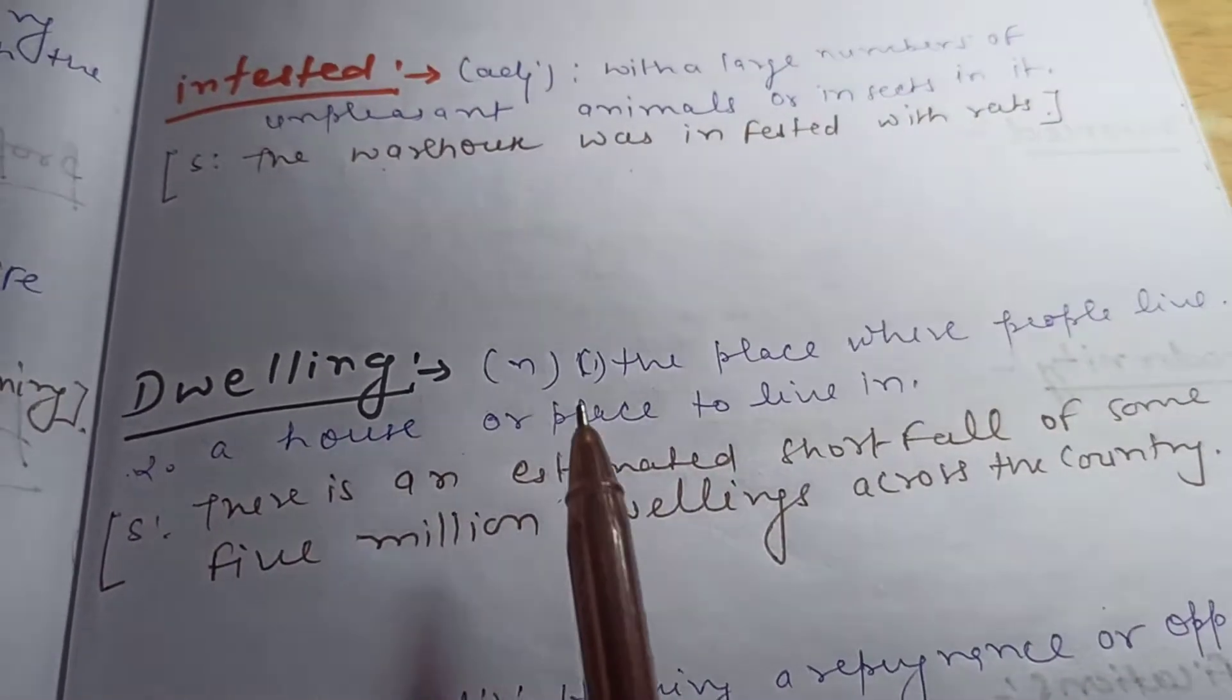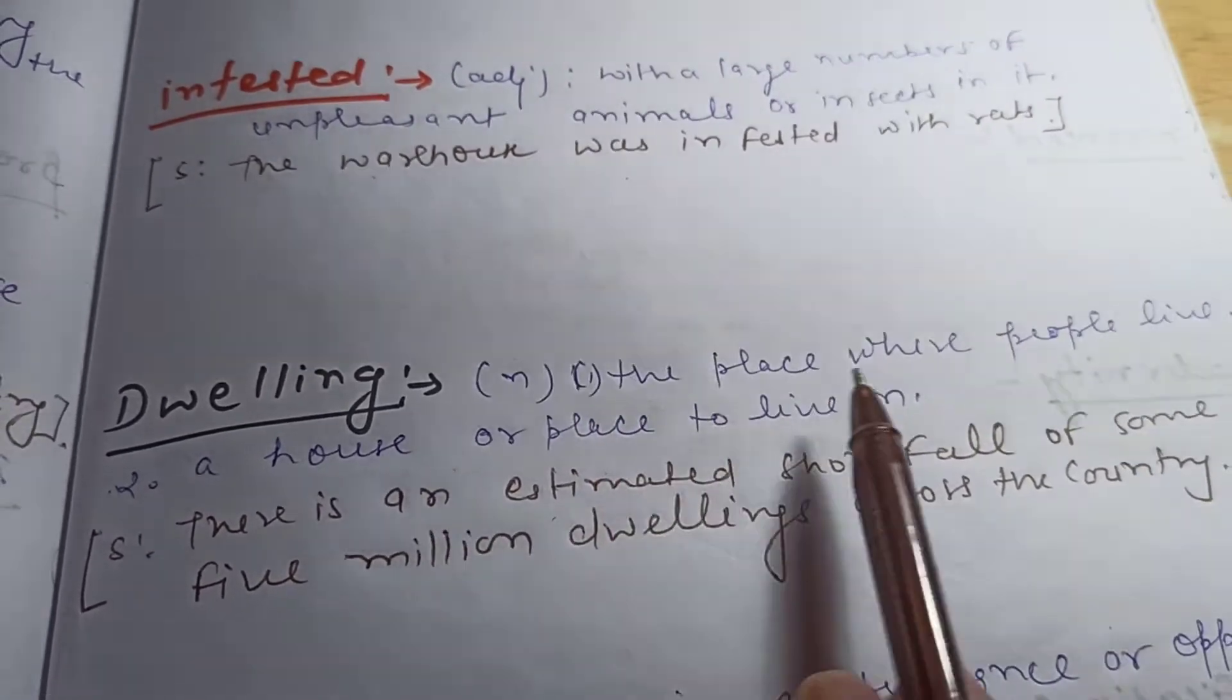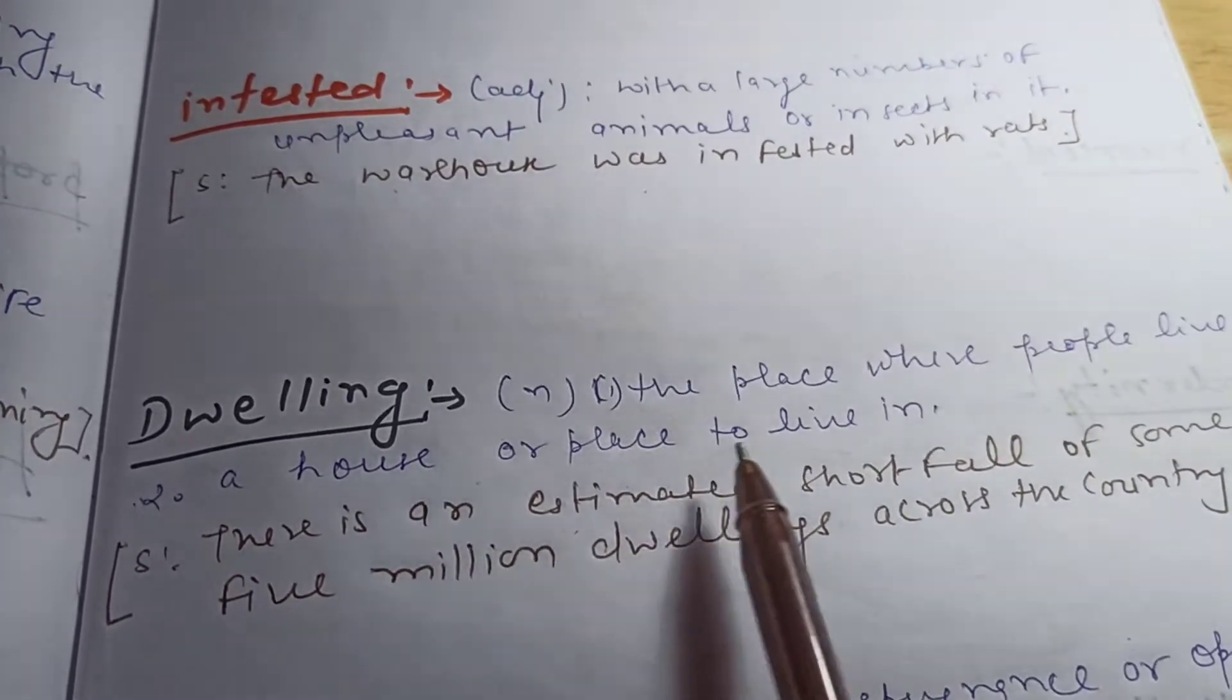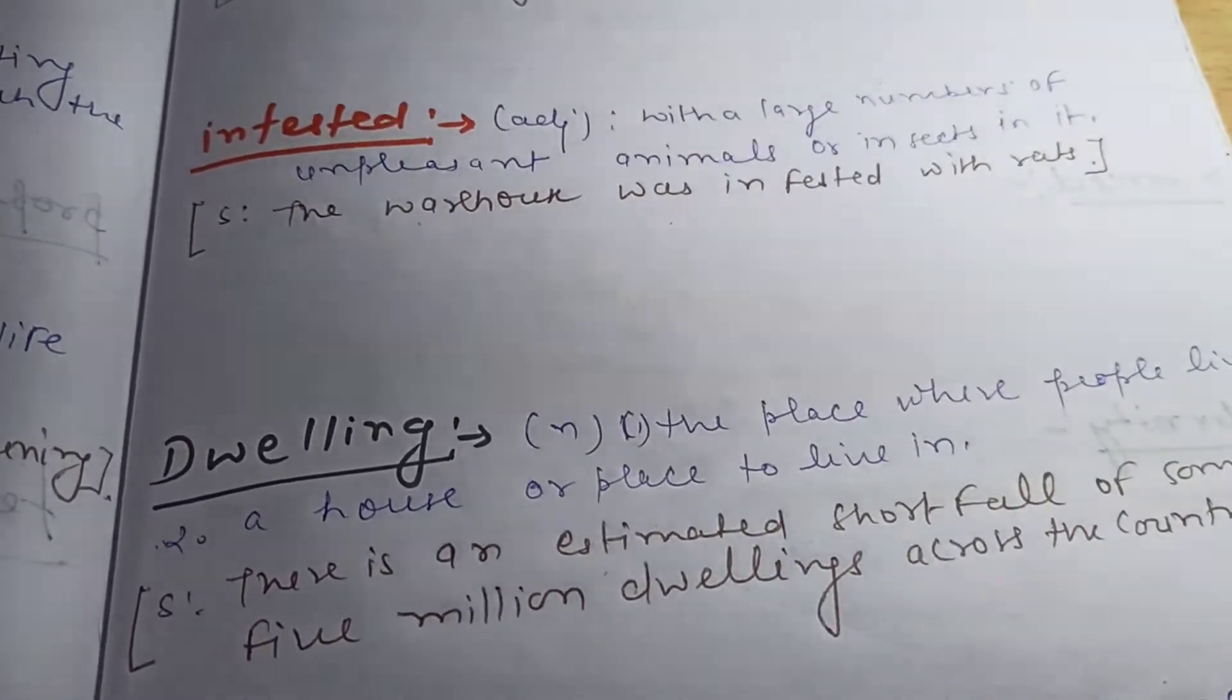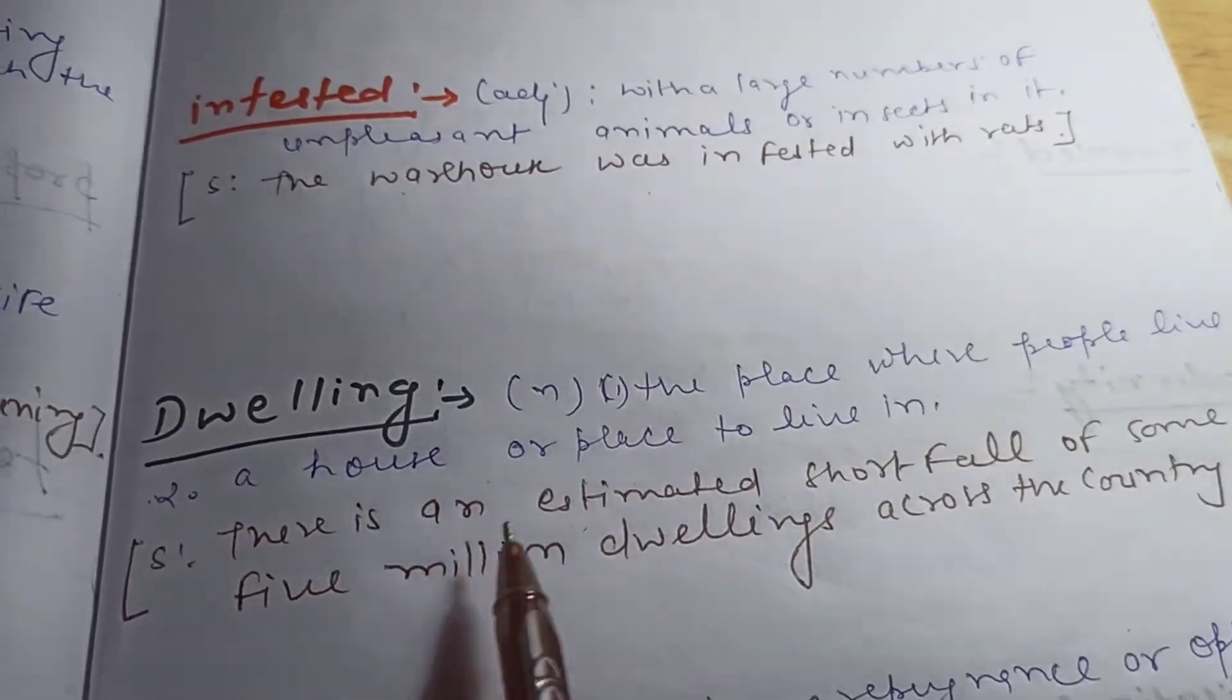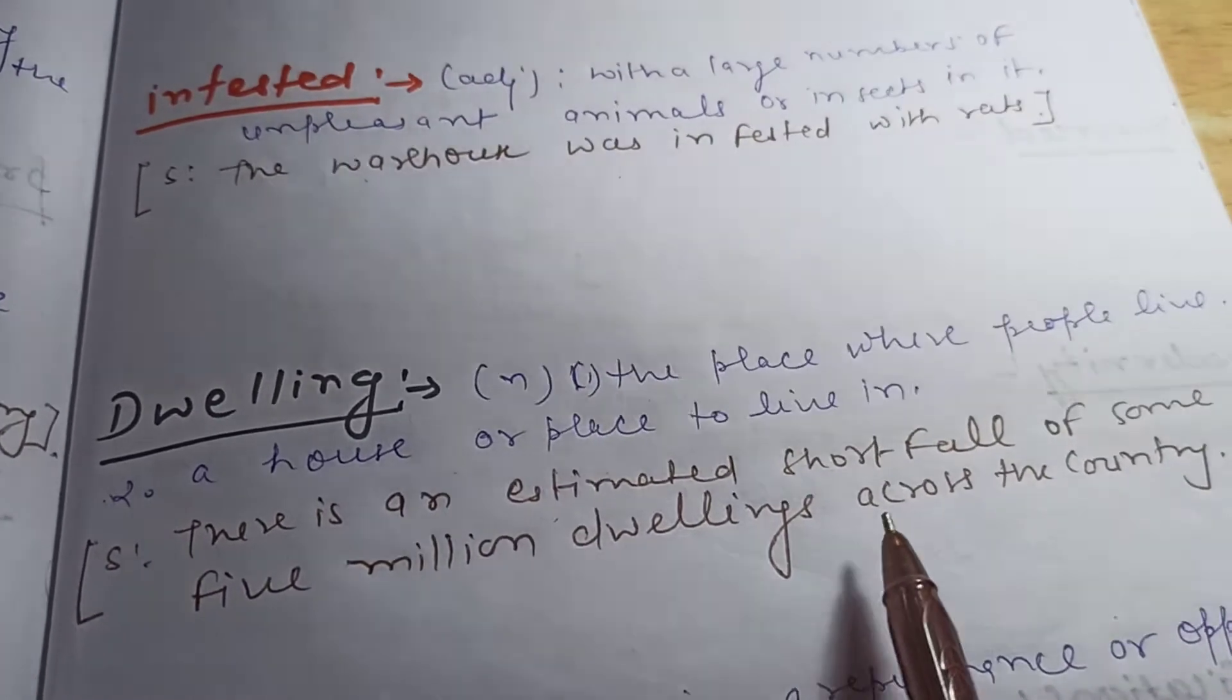Dwelling - dwelling is a noun, and the meaning of this word is the place where people live. Second meaning is a house or place to live in. Aisie jaga jahaan peh log rahein, uske liye hum dwelling use kar sakte hai. Sentence of this word is: there is an estimated shortfall of some 5 million dwellings across the country.